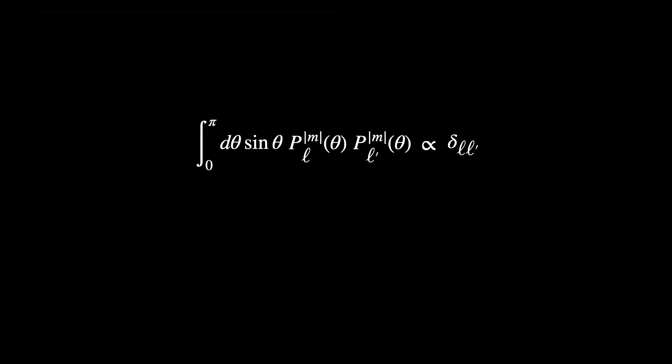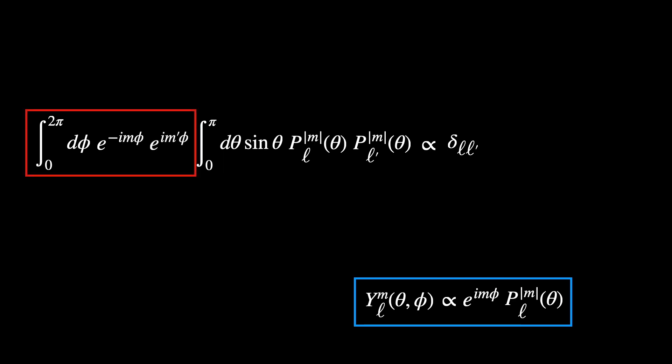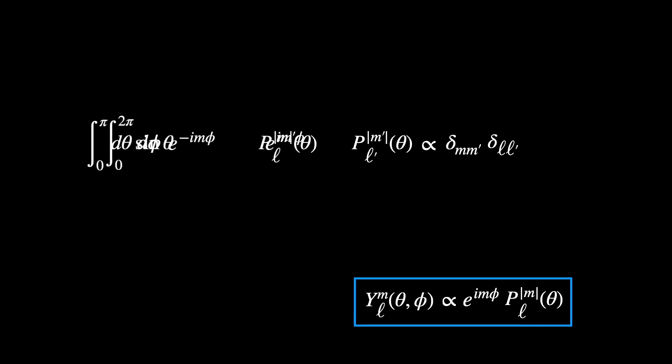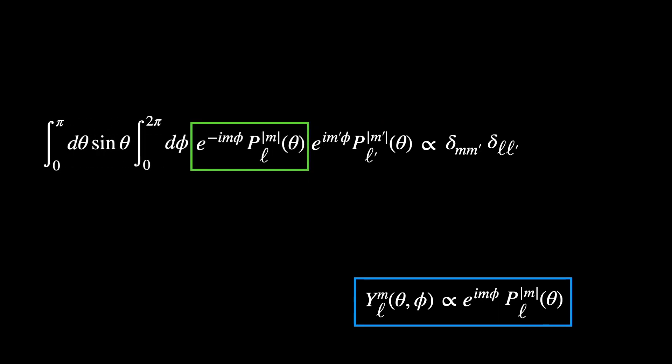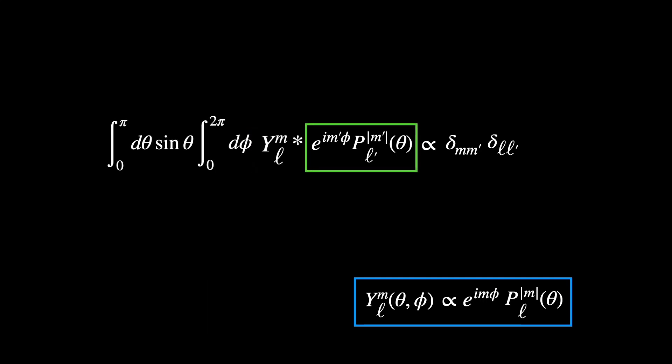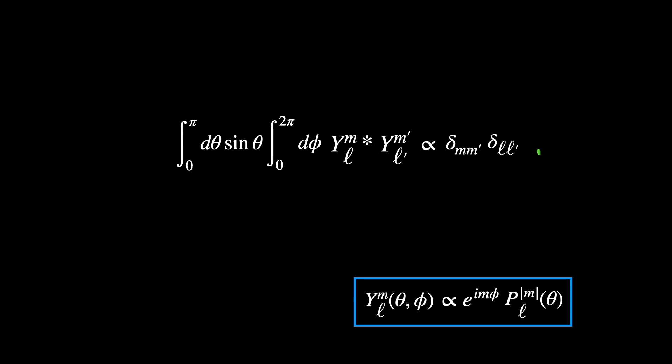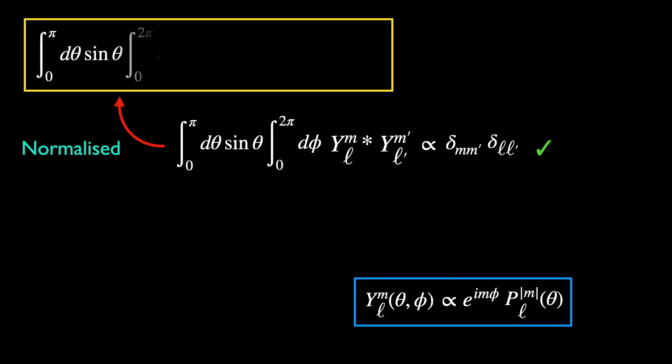Let's demonstrate the orthonormality of the spherical harmonics, including the earlier integral over phi, which is proportional to the delta of M M'. This delta would allow us to write M' for the second function. We can then write the integrand as a product of spherical harmonics. By choosing the appropriate normalization constant, we are led to the orthonormality of the spherical harmonics.